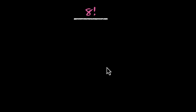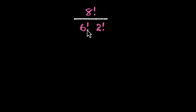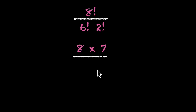Let's look at one more: 8 factorial divided by 6 factorial times 2 factorial. Using what we just learned, 8! divided by 6! is 8 × 7 = 56. Then divide by 2! which is 2, and that gives us 28.